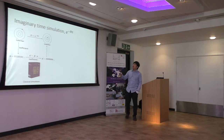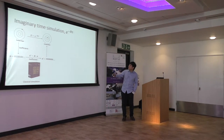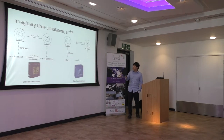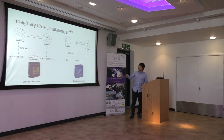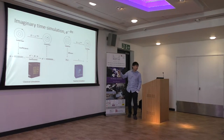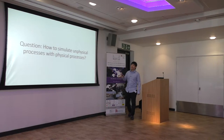Now let's see how we can do it for imaginary time on a classical computer — we encode the states using a vector and the evolution by a matrix, then multiply. This is okay but may not be efficient for realistic systems. For a quantum computer, we can still encode states efficiently, but the problem arises when we want to realize the evolution, because imaginary time evolution is not physical — it's not unitary. So the problem is: how do we simulate an unphysical process with a physical device?